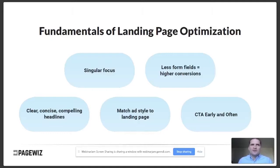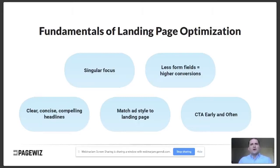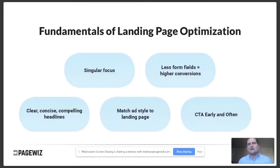The second fundamental is fewer form fields — the fewer fields people need to fill out, the more likely they are to complete the form. If you want to add things like phone number or company name, you can, but test how much conversions drop. It might make sense to accept a slightly lower conversion rate in exchange for that additional information.